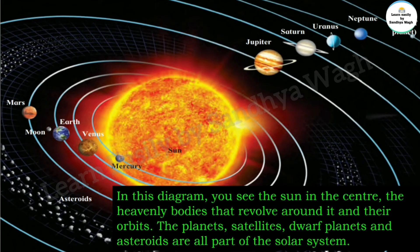So tell me, what is the solar system? The sun, along with planets, satellites, asteroids, meteoroids, comets, and all other heavenly bodies that revolve around it, forms the solar system.